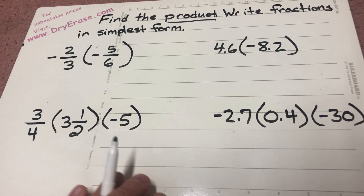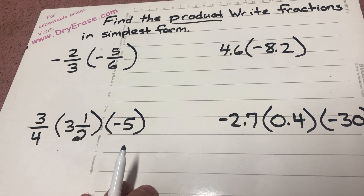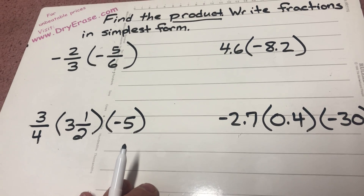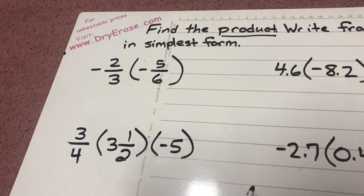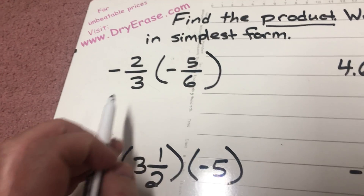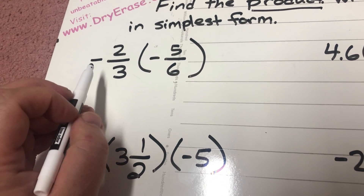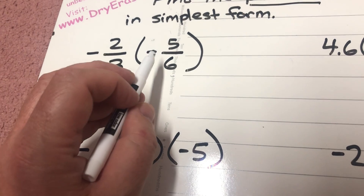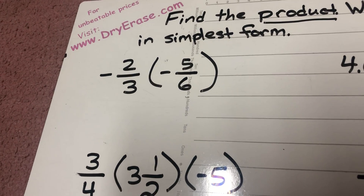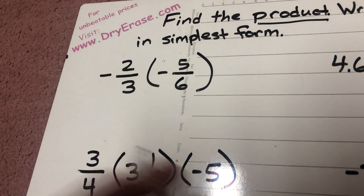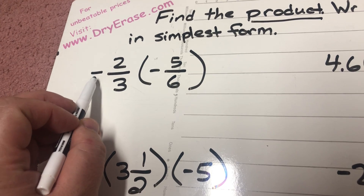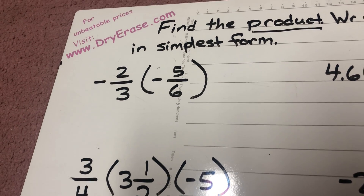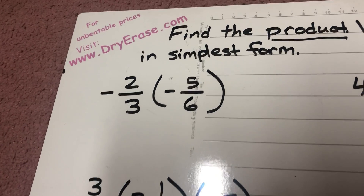We're also going to be dealing with both negative and positive numbers. On this particular problem, this is going to be a negative two-thirds times a negative five over six. Anytime I'm multiplying a negative by a negative, we need to understand that that's going to be a positive answer.